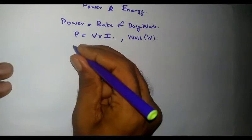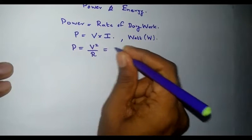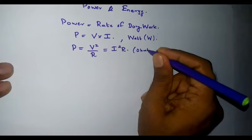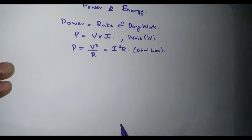We can also represent power as P = V²/R, and also as P = I²R. These are three different equations for electrical power from Ohm's law.